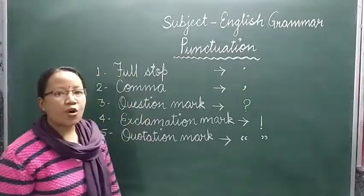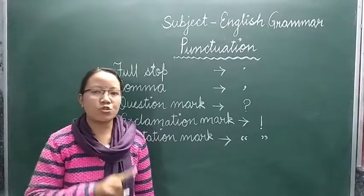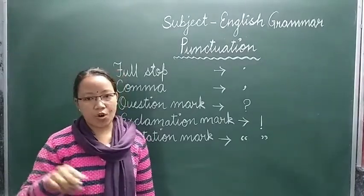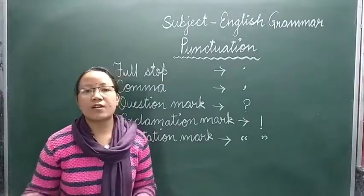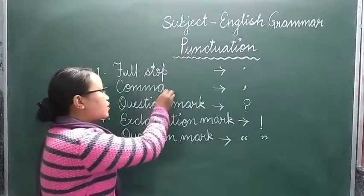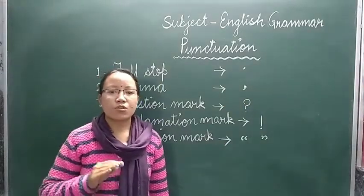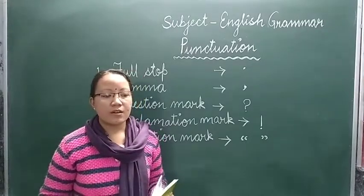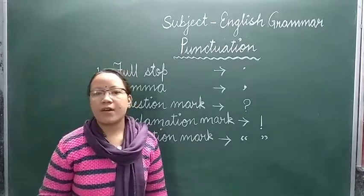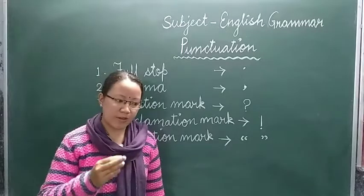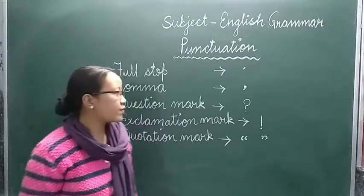The second punctuation mark is the comma. Comma indicates a short pause. For example: 'I like ice cream, chocolate, toffee, and cakes.' The comma is used when listing items. Another example: 'Recha, Seema, and Rita are my friends.' So this is the use of the comma.